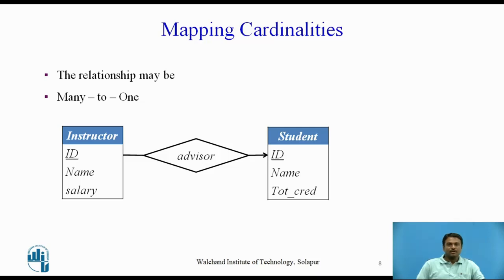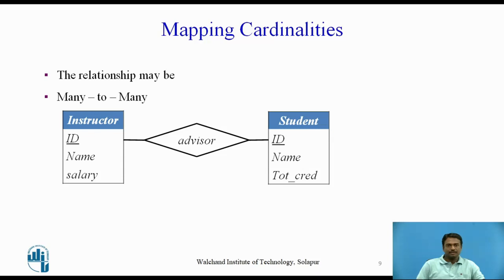In many-to-many mapping, we draw an undirected line from the relationship set advisor to both entity sets, instructor and student, as shown in the figure. This indicates that an instructor may advise many students and a student may have many advisors.